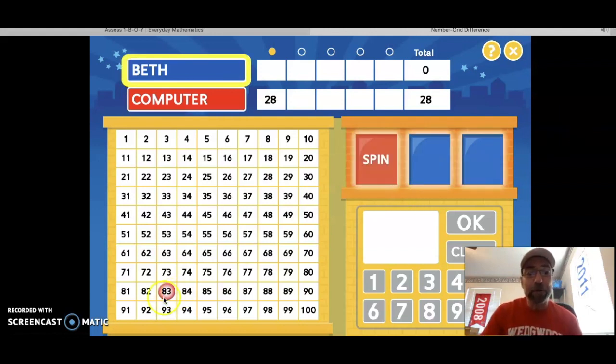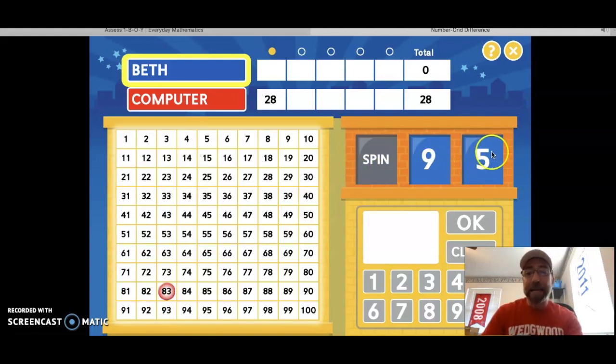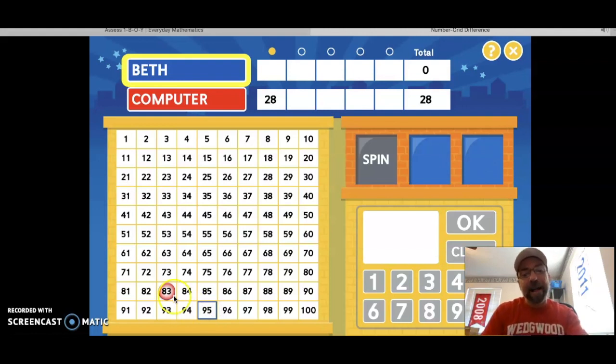The computer will start this round. So the computer chose the number 83. Now, here are my choices. I could make 95, which would be here, or I can make 59, which would be here. But remember, the lesser the difference, the better chance you have of winning. So I want to make a number that's close to 83. What do you think? I'm going to go with 95. Enter the difference. Now, I have to find the difference between these two numbers, and I can use my sheet protector to help me. So I'm going to go down 10, 11, 12.